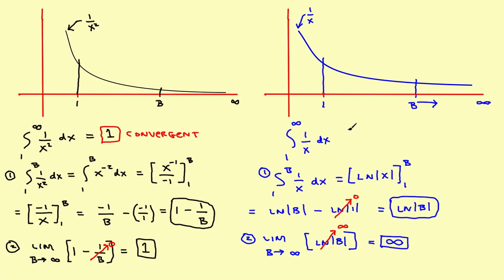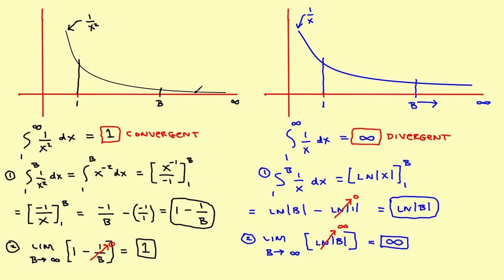The integral from 1 to infinity turns out to be infinity. You're adding an increasingly large area that never settles on a fixed number — the farther you go to the right, the more area is added, and it never converges. The limit does not exist; it approaches infinity. The word for this is divergent. So if the limit does not exist, the integral is divergent.